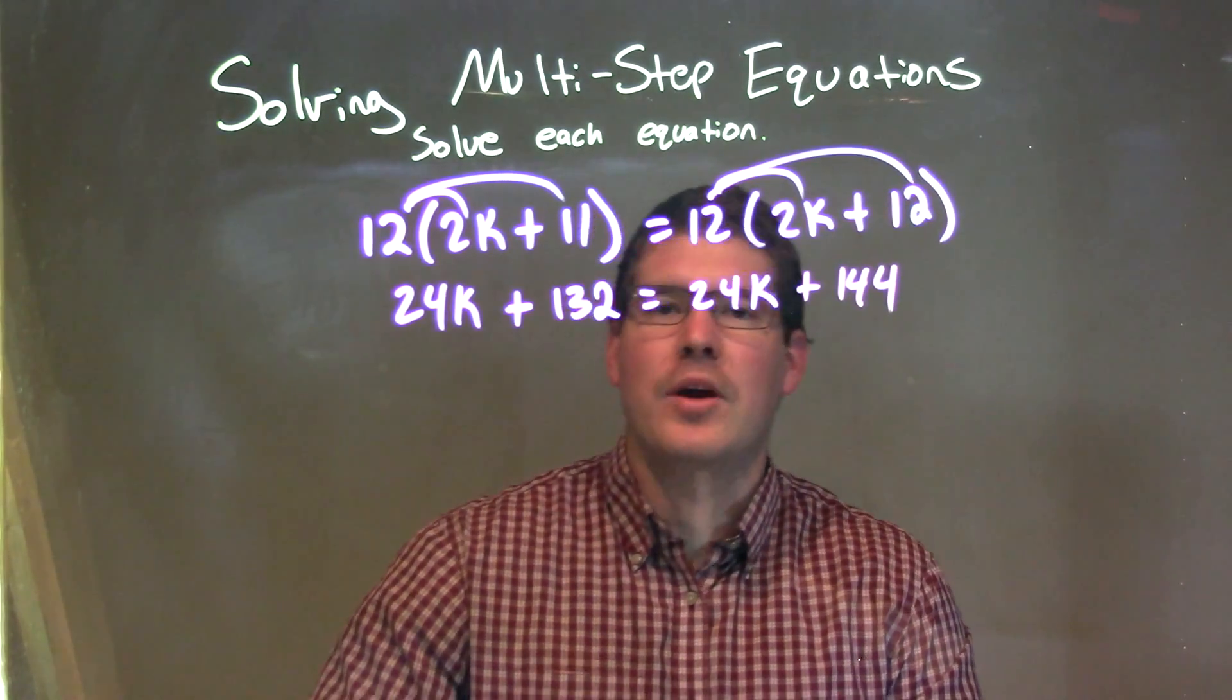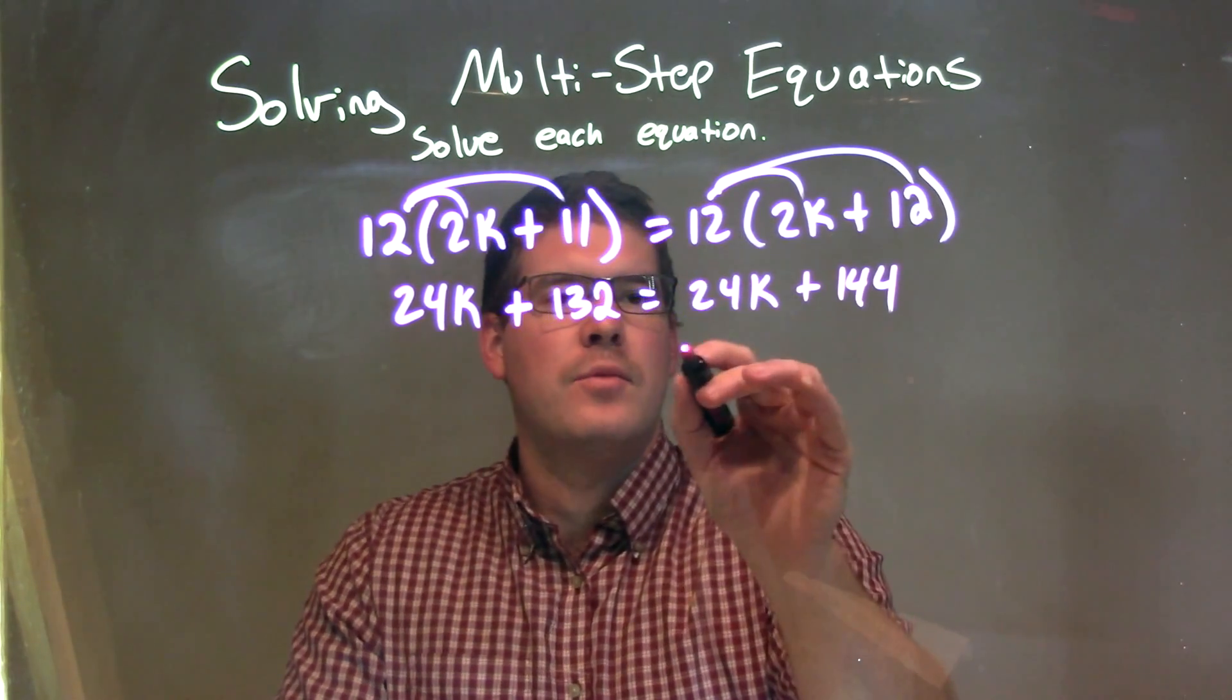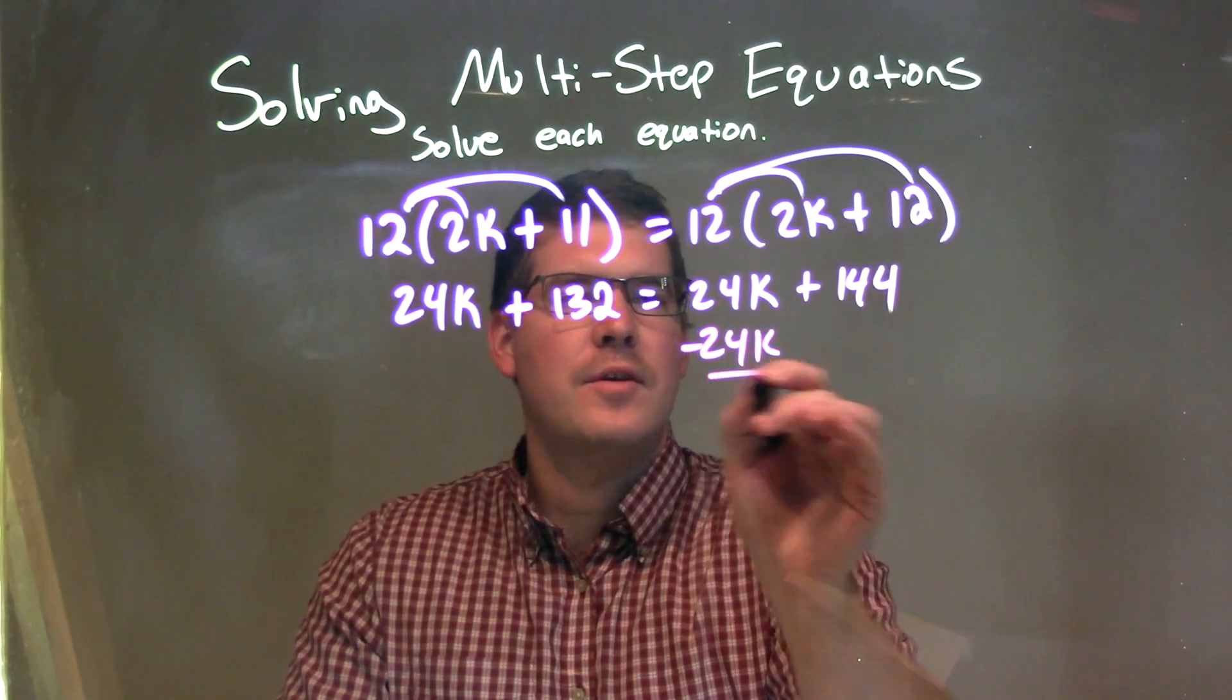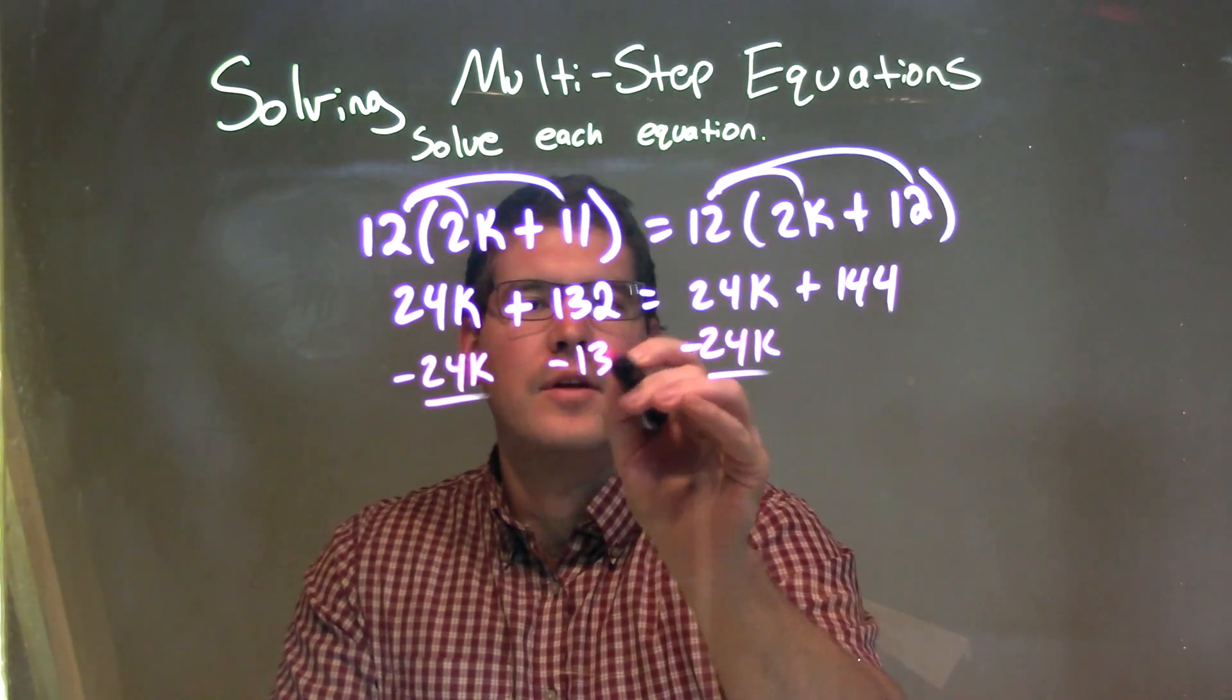So now let's simplify. Let's bring our variables to the left and our numbers to the right. So I'm subtracting 24k to both sides here, and I'm subtracting 132 to both sides.